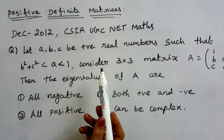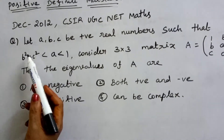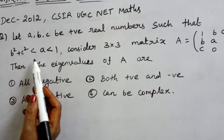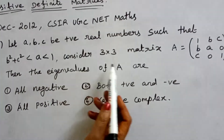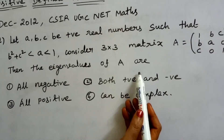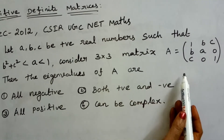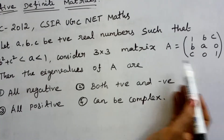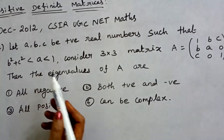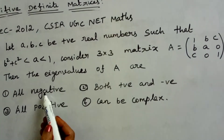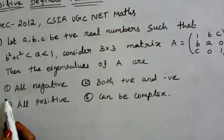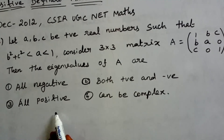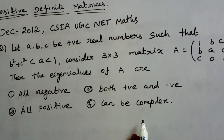December 2012, CSIR UGC NET Exam. Let A, B, C be positive real numbers such that B² + C² < A < 1. Consider a 3×3 matrix A. The eigenvalues of A — we need to determine their nature from 4 options: all negative, both positive and negative, all positive, or can be complex.